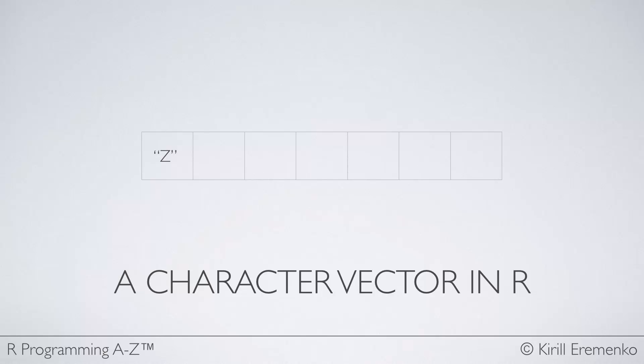So a character vector would have character elements in it. And we've already talked about character variables. So there's letter Z, and of course, it has to have quotation marks as any character value, letter F, or the number seven, but represented as a character.